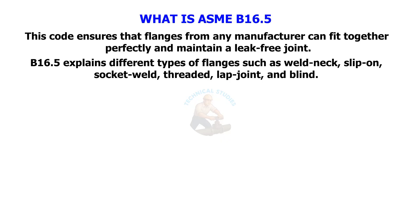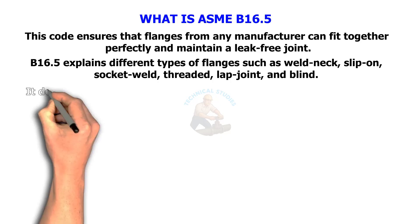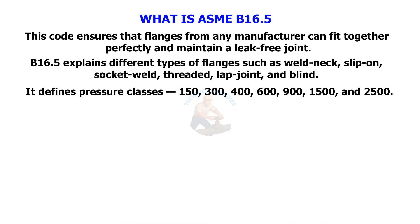B16.5 explains different types of flanges, such as weld neck, slip-on, socket weld, threaded, lap joint, and blind. It defines pressure classes 150, 300, 400, 600, 900, 1500, and 2500.